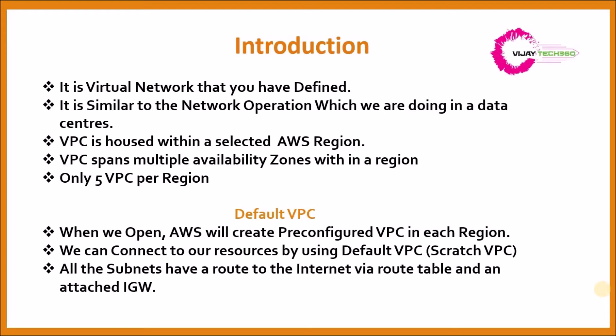VPCs are restricted to five VPCs per region by default. If you want more, you have to request from AWS and they will increase the limit, but the default limit is five.